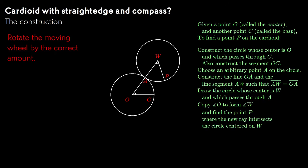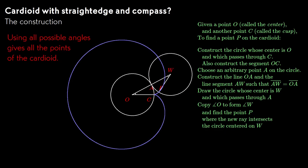We use the compass to draw the moving wheel. We use straightedge and compass to duplicate the central angle and intersect the new ray with the moving wheel. Since the radii of the central angles are equal, the arc lengths are equal. Every possible choice of angle, or every possible choice of contact point, gives another point of the cardioid. The cardioid is defined as the locus of all these points.